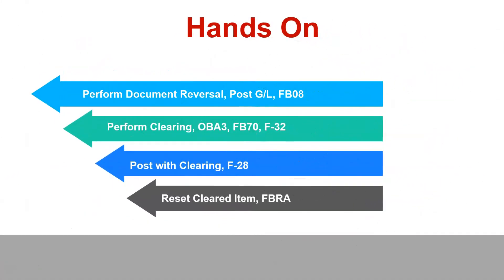Before concluding the course, we will do more hands-on exercises. We will reverse some FI documents, create more documents, post to the general ledger using T-code FB08, and practice creating FI documents and clearing them. We will learn and practice T-codes OBA3, FB70, and F32. The trainer will also explain T-codes F-28 and FBRA, with hands-on exercises covering posting and reset of cleared items.